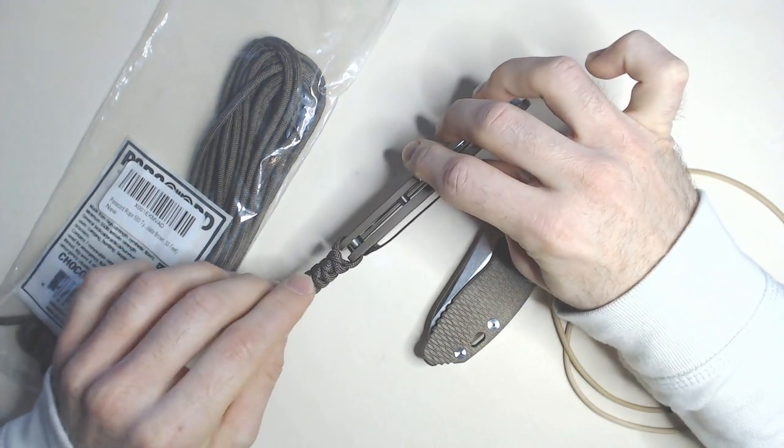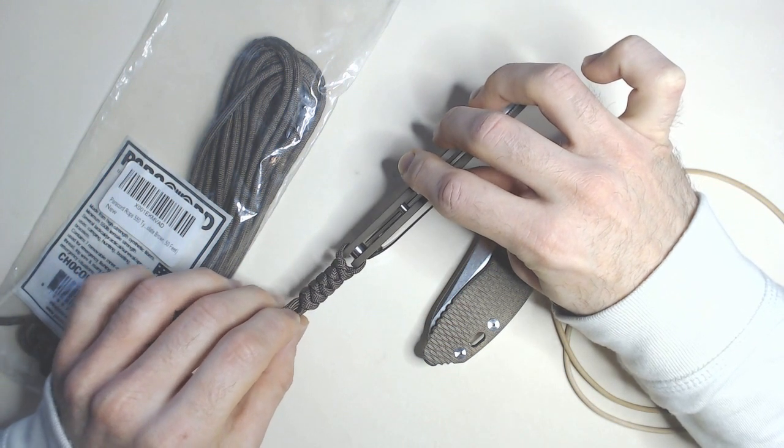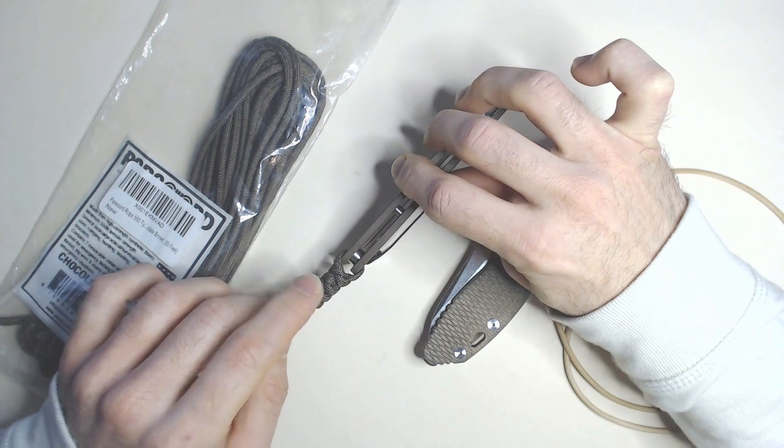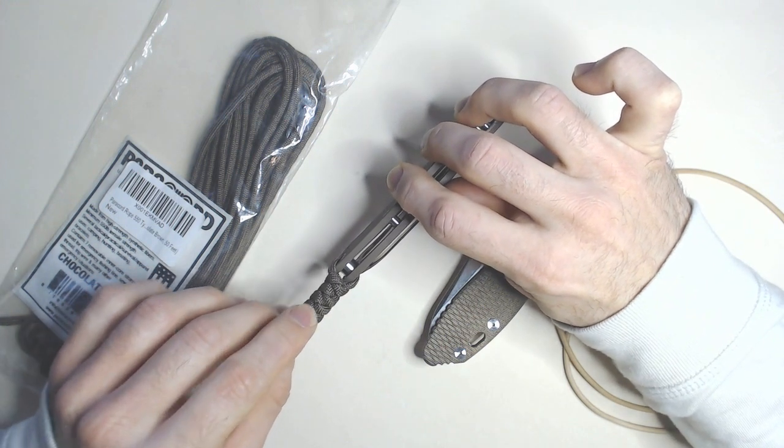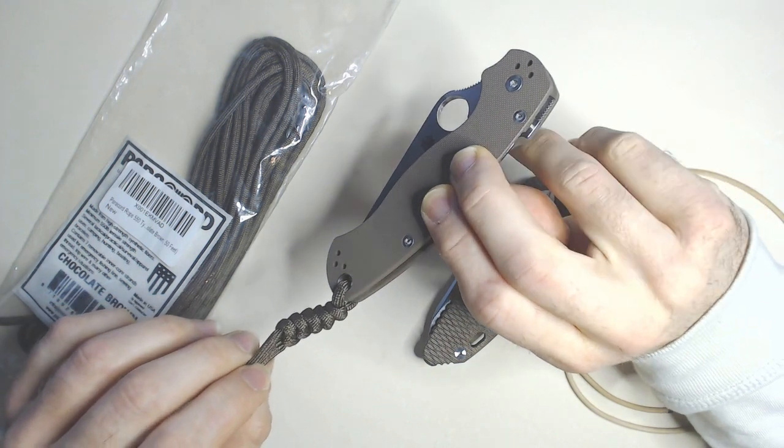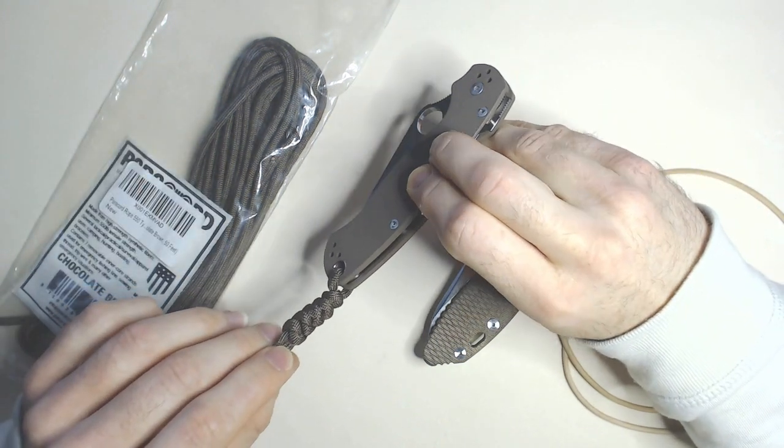This here is the knot I usually put on. It's the one I've come to know, and I've become more of a one-trick pony here with the snake lanyard knot. So that's what the final product would look like with a paracord. This is a brown paracord here, a standard 550.